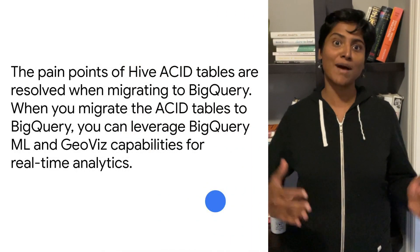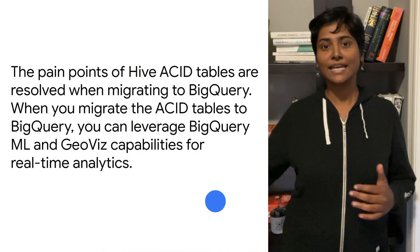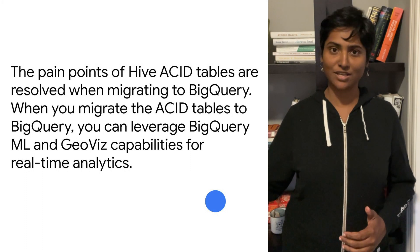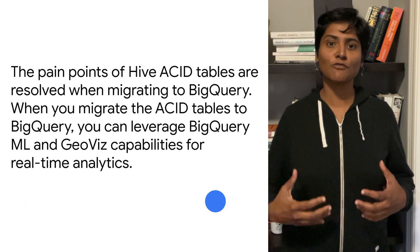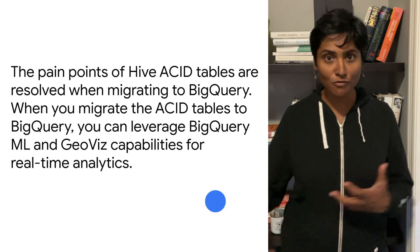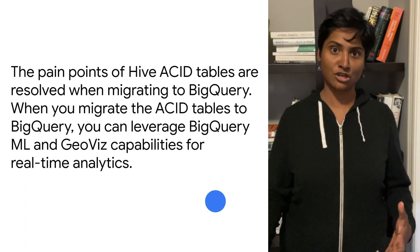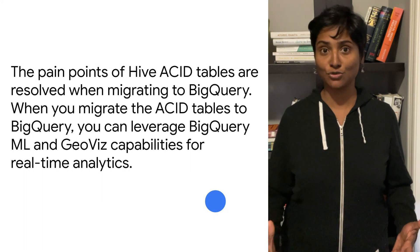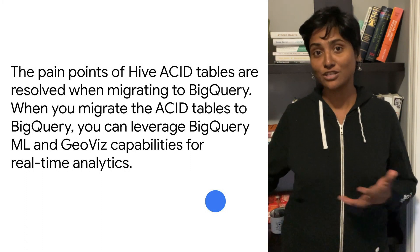The way Hive manages the underlying data is different from the way BigQuery manages the underlying data. The pain points of Hive ACID tables — like small files issues, compaction issues, and locking issues — are resolved when migrating to BigQuery.